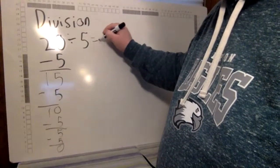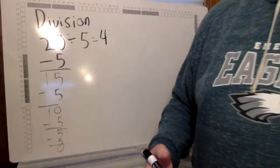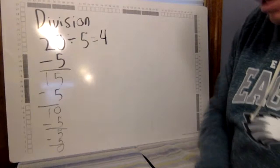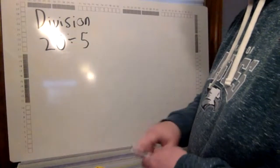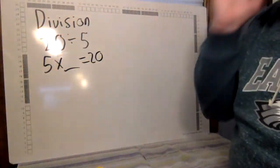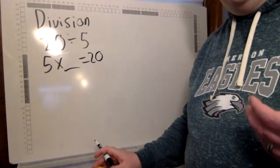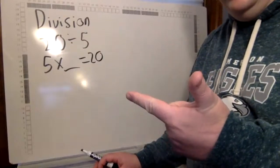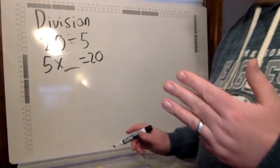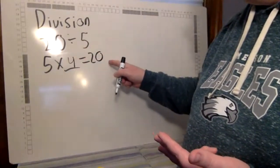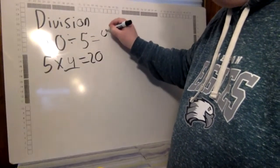Then I would count how many times I subtracted 5: one, two, three, four. So 20 divided by 5 equals 4. Another thing about division is that it's the inverse operation of multiplication. So if you wanted to figure out 20 divided by 5, you could flip it into a multiplication problem: 5 times something equals 20. Using skip counting — 5, 10, 15, 20 — I counted four 5s, so 20 divided by 5 equals 4.